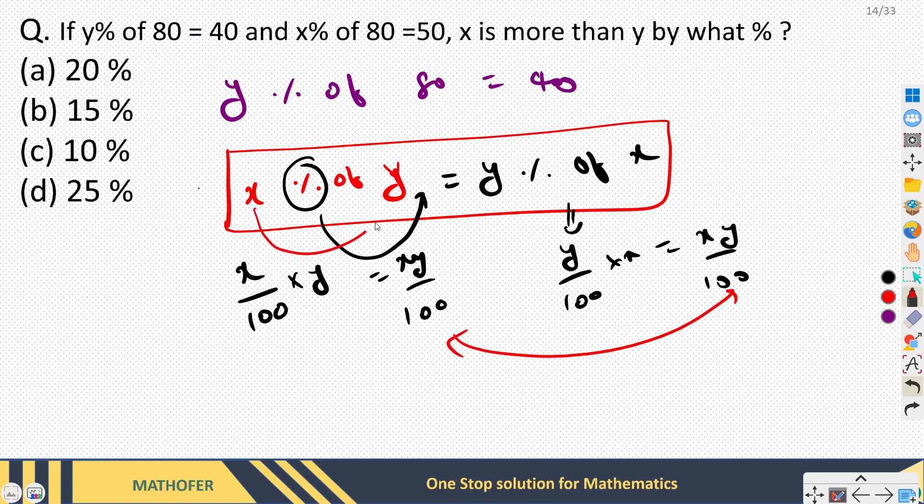So we can interchange x and y. Same way I can interchange y and 80. I can rewrite this as 80 percent of y, and this is a very good trick. Now 80 percent of y equal to 40.